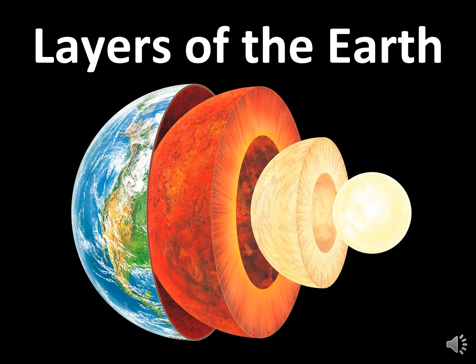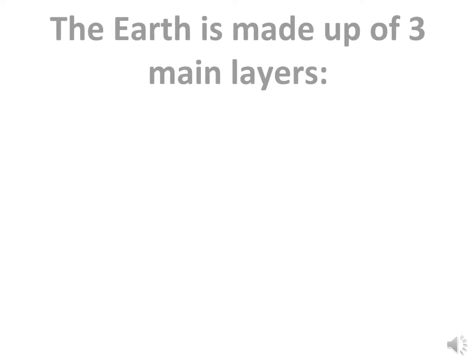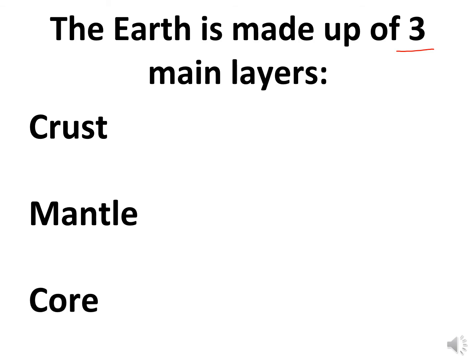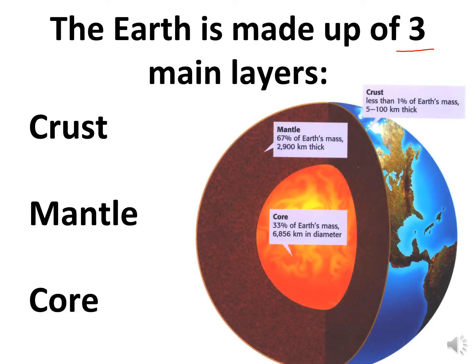Layers of the earth. We want to pull back the layers of the earth like it was an onion. The earth is made up of three main layers: the crust, the mantle, and the core. The crust is less than 1% of the earth's mass, only 5 to 100 kilometers thick. The mantle is 67% of the earth's mass and 2,900 kilometers thick. The core is 33% of the earth's mass and about 6,900 kilometers in diameter.